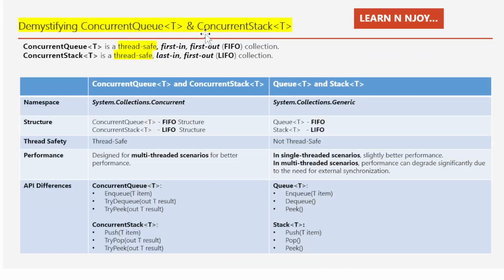Demystifying ConcurrentQueue<T> and ConcurrentStack<T>. So, what is ConcurrentQueue? ConcurrentQueue<T> is a thread-safe First In First Out — FIFO — collection. It means that the first item added to the queue is the first one to be removed. Whereas ConcurrentStack is a thread-safe Last In First Out — LIFO — collection, meaning the last item added to the stack is the first one to be removed.